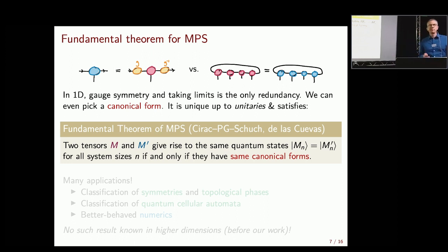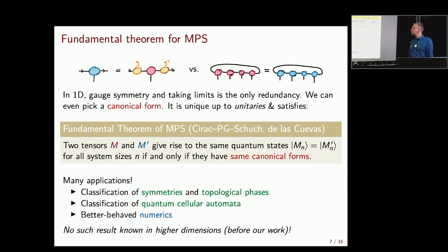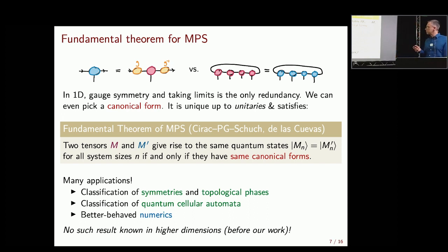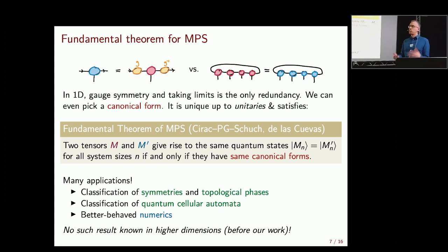The fundamental theorem says two tensors give rise to the same many-body quantum states for all system sizes if and only if they have the same canonical forms, which holds if and only if they're related by gauge symmetry and taking limits. There are also practical applications: going to canonical form is like picking a well-conditioned representation of your tensor, which may tell you how to truncate. It's a beautiful story in 1D, but when one goes to higher dimensions there are many problems.